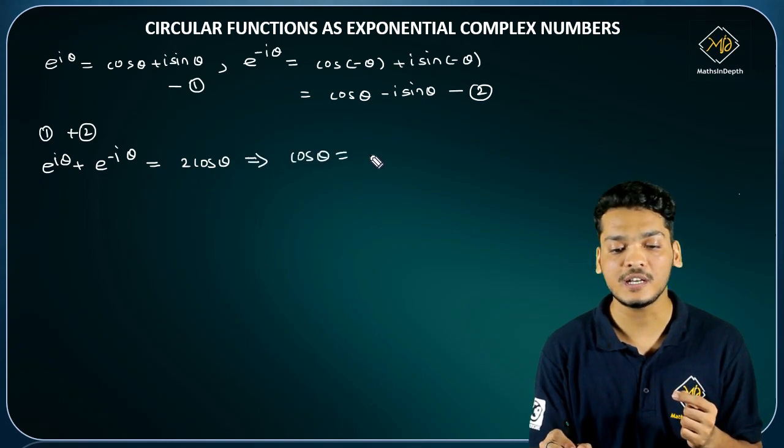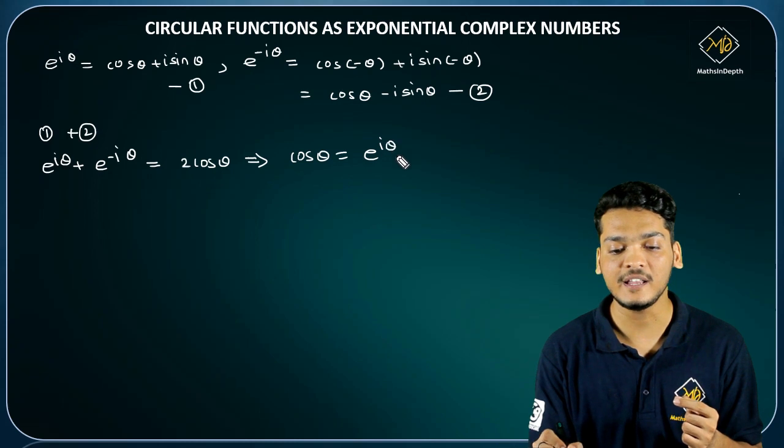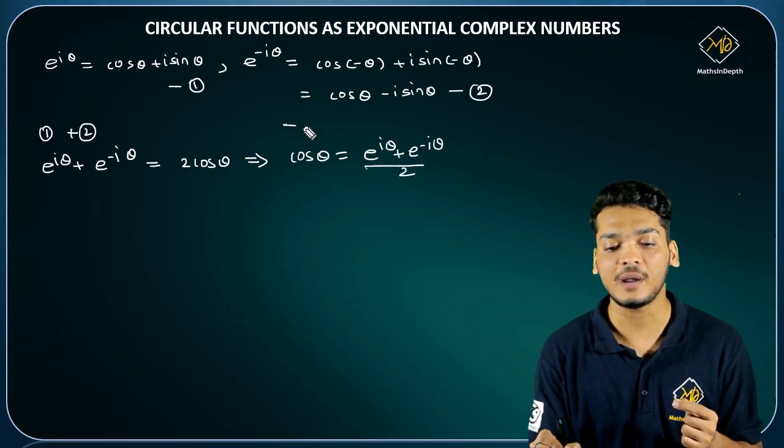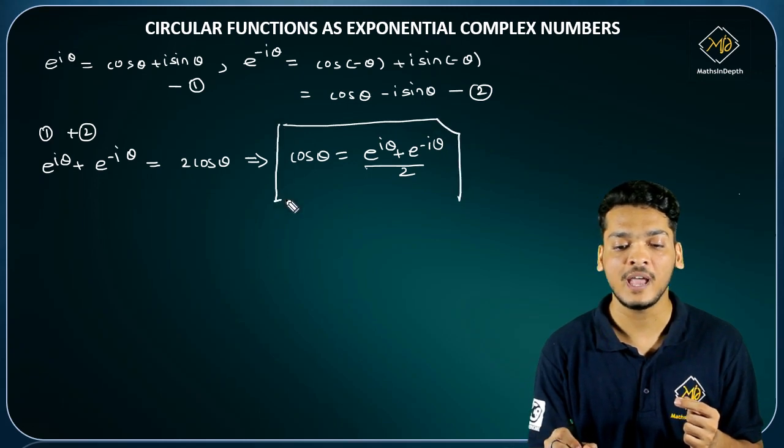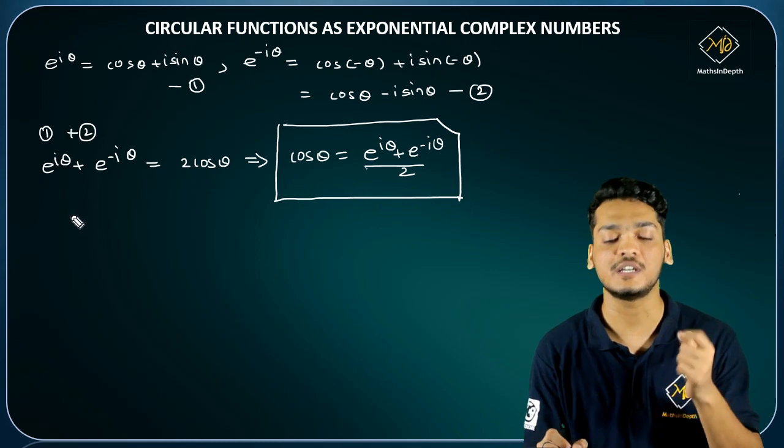This implies that cos theta equals e raised to i theta plus e raised to minus i theta divided by 2. This formula is known as the exponential complex number formula for cos theta.